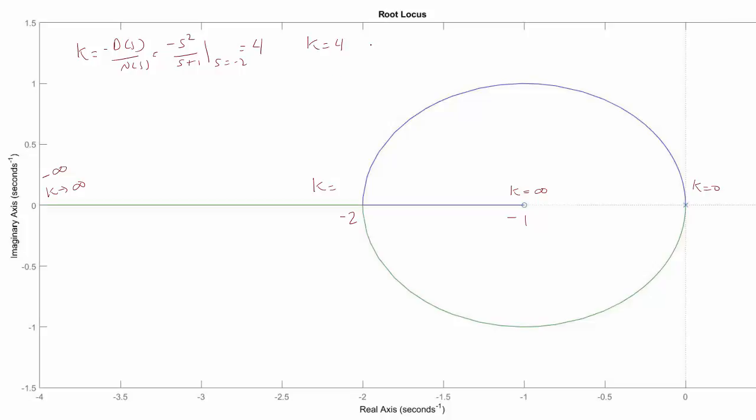When k is equal to 4, we have closed loop poles at negative 2 and negative 2 as we've seen here after they separate up here. And so that happens at k equal 4.